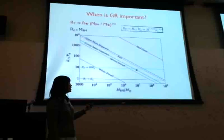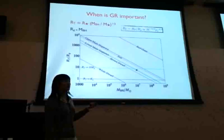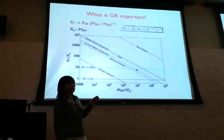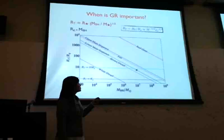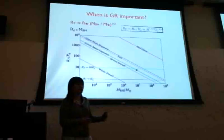We define the dimensionless quantity RT tilde, which is RT over the gravitational radius of the supermassive black hole. We find this relative size goes as the mass of the supermassive black hole to a negative power, and also as the mean density of the star to a negative power. This means denser stars can approach the black hole closer, and for the same star, the more massive the black hole is, the closer the star can approach it, and GR is more important.